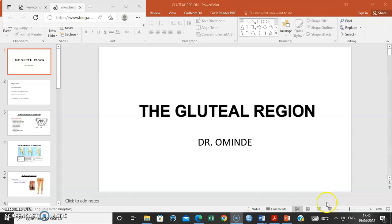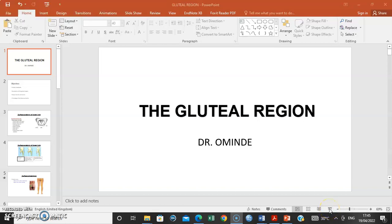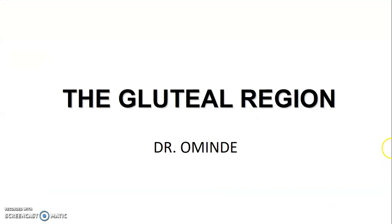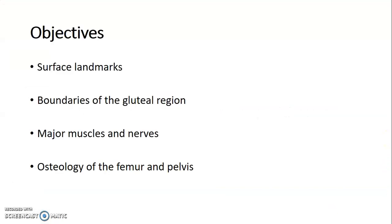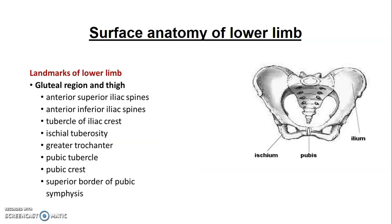Hello everyone. My name is Dr. Ominde. We start our lower limb series, beginning with the gluteal region. We'll cover the surface landmarks, the boundaries of the gluteal region, the major muscles and nerves, and osteology of the femur and the pelvis. Those are the things you're expected to know.